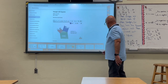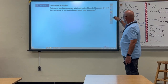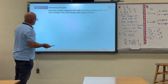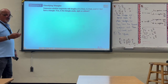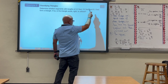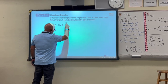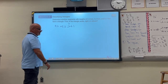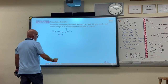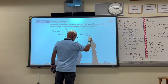Let's do some examples applying these relationships. The first one asks whether segments with lengths 4.3, 5.2, and 6.1 form a triangle. We check the triangle inequality: 4.3 plus 5.2 equals 9.5, which is greater than 6.1, so they do form a triangle. It's enough to check that the sum of the two shorter sides is greater than the longest one — if that works, the other combinations are automatically satisfied.